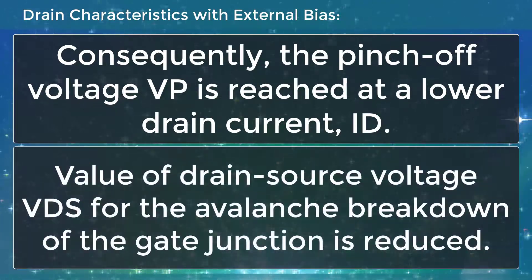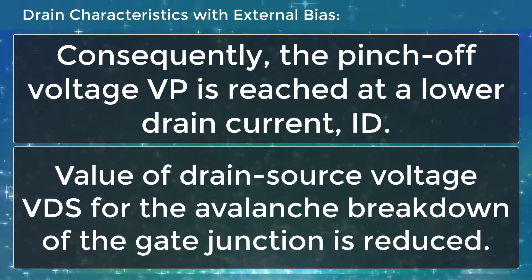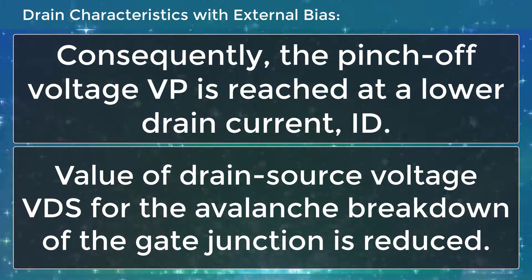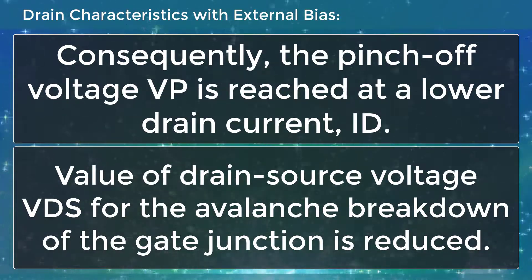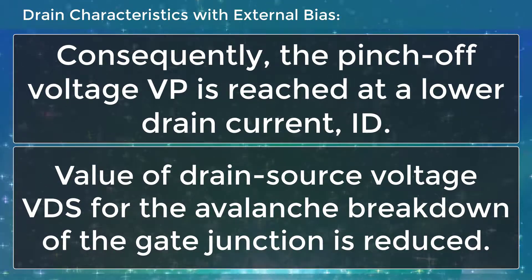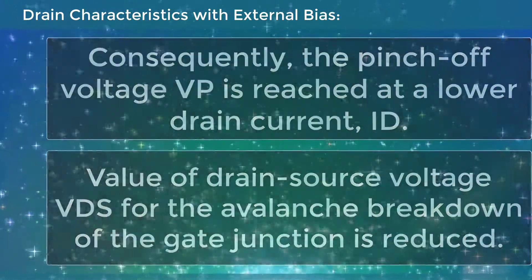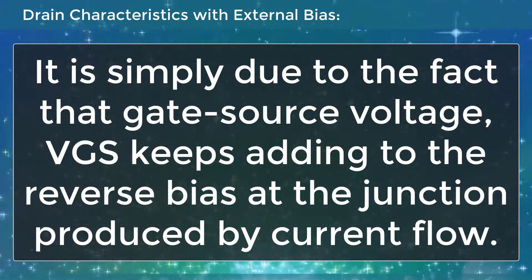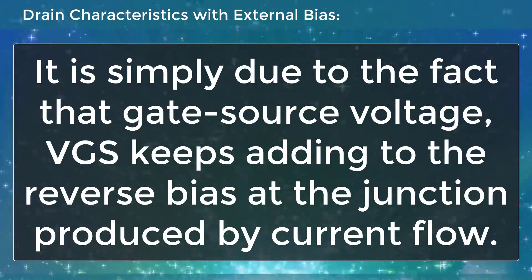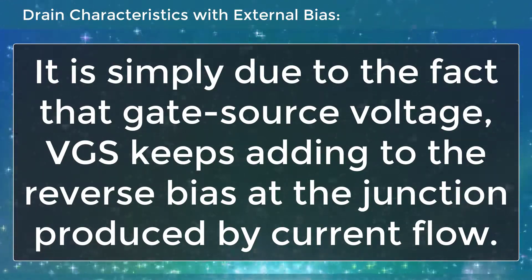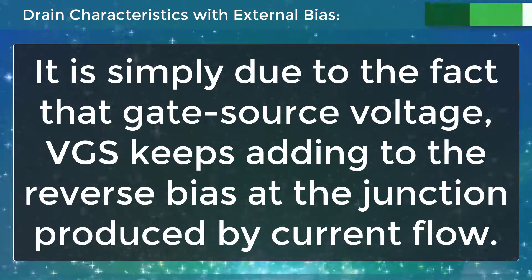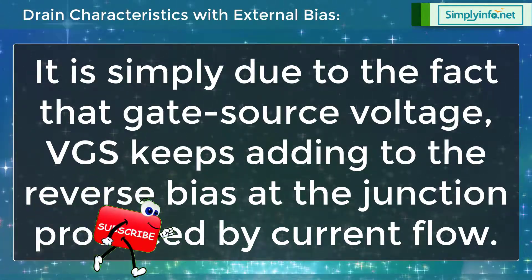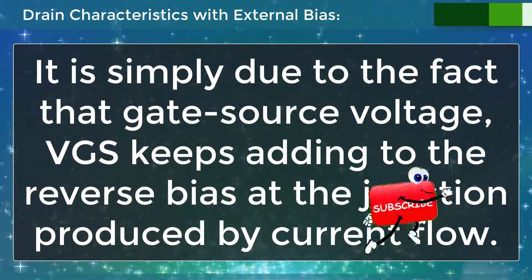The value of drain-source voltage VDS for the avalanche breakdown of the gate junction is reduced. It is simply due to the fact that gate-source voltage VGS keeps adding to the reverse bias at the junction produced by current flow.